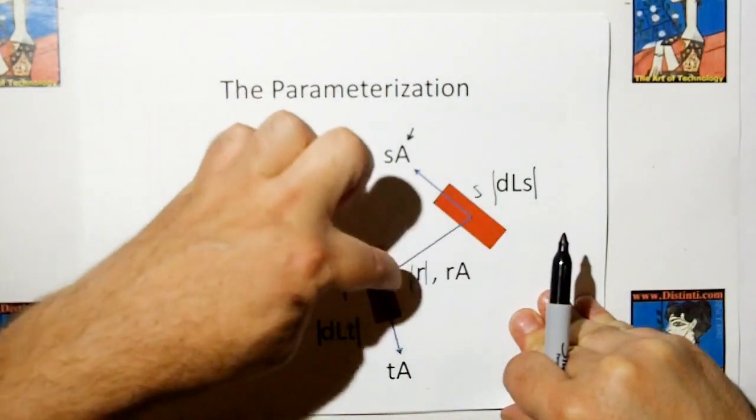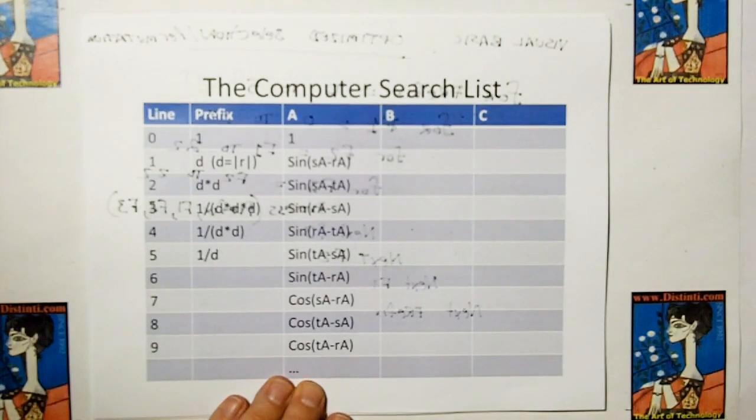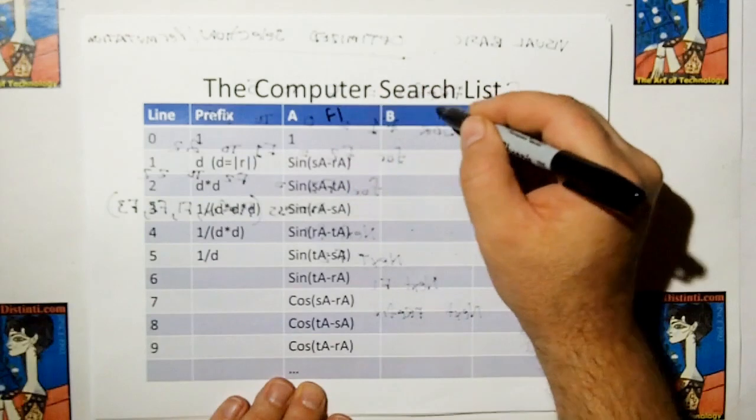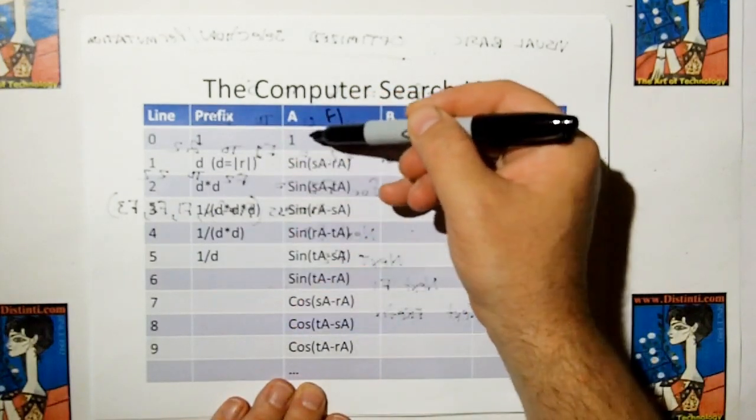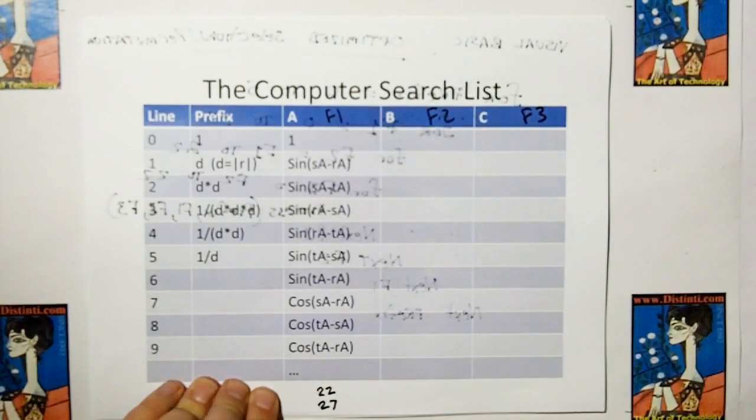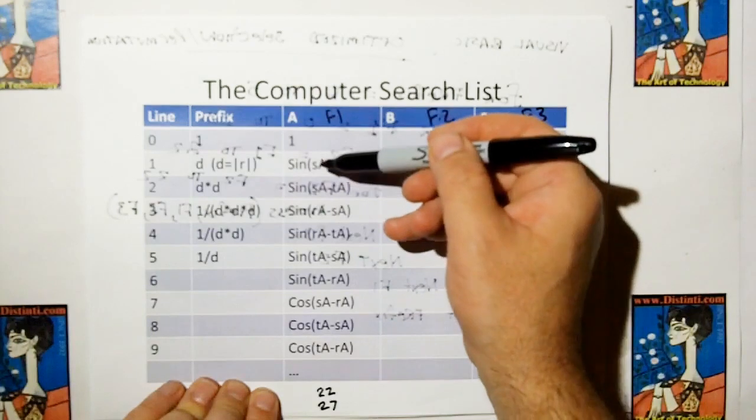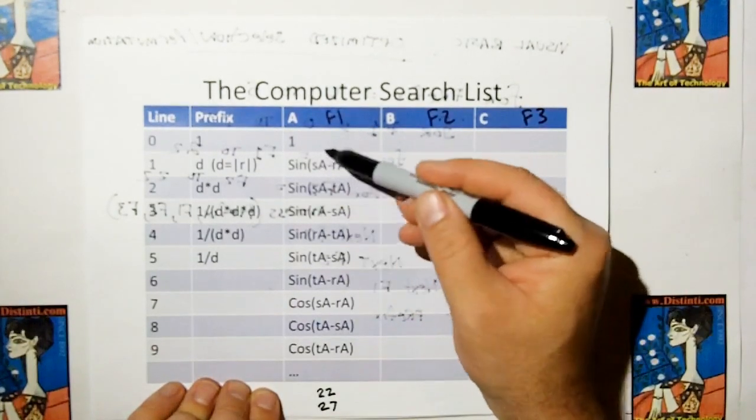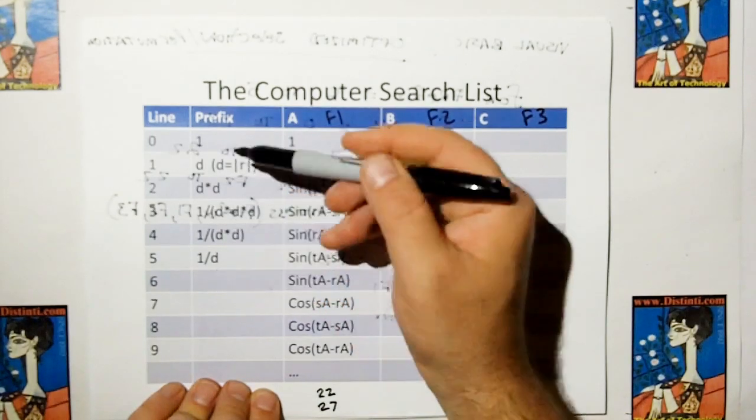So how do we come up with how this fragment interacts with this fragment? Well, I came up with a computer program. Sorry for the mess. The computer search has four columns in it. It has a prefix, A, B, and C, which in the computer software I call F1, F2, and F3, function 1, 2, and 3. And what the computer is going to do, it's going to go through each one of these prefixes and permutate that with each one of these A geometries. This actually goes down to 22 in the newer software. It goes down to 27 geometries in the old software. And columns B and C are identical to A. The reason why I did that is because if you select geometry, you can have sine cubed. If it goes across, you get sine cubed of the source angle minus the radial angle.